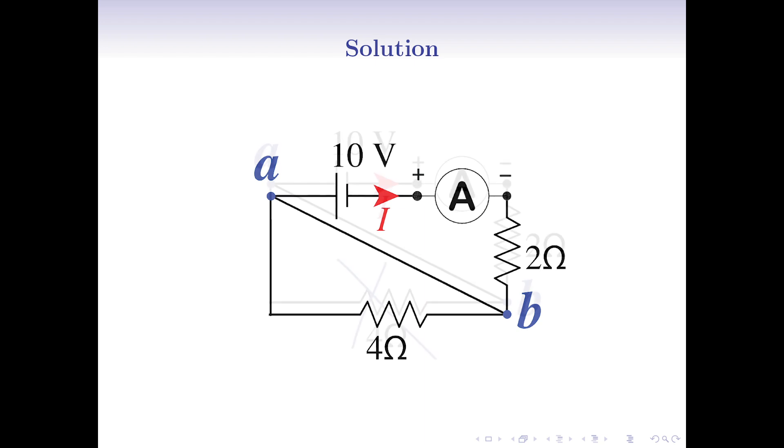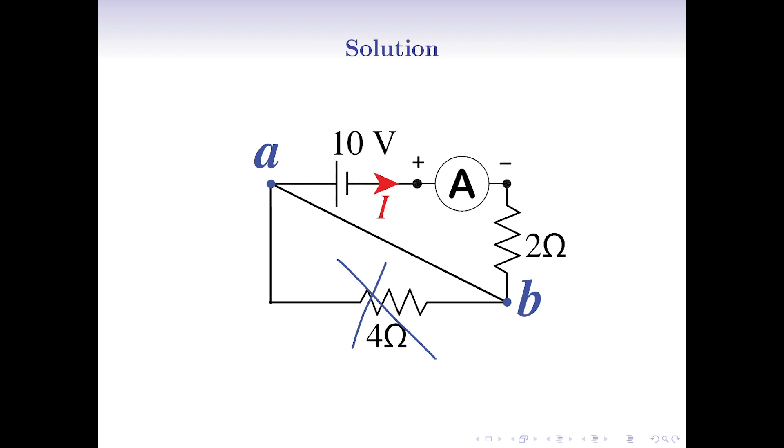So, we can remove it from the circuit. Also, the ampermeter has zero resistance, that means it's just a short circuit too.